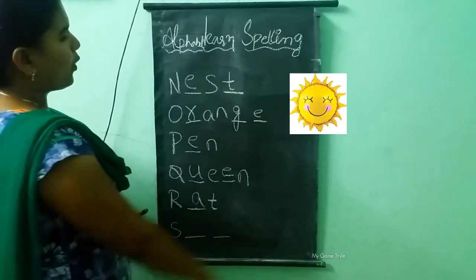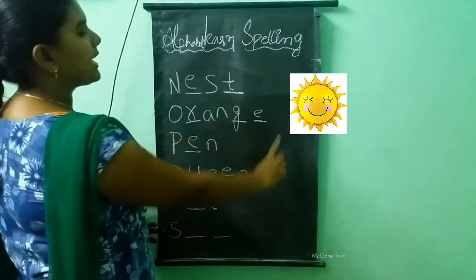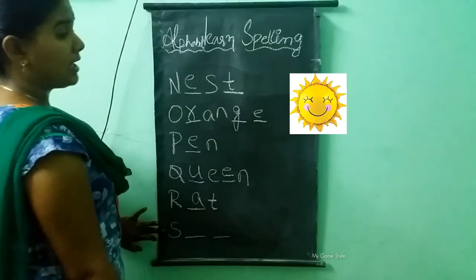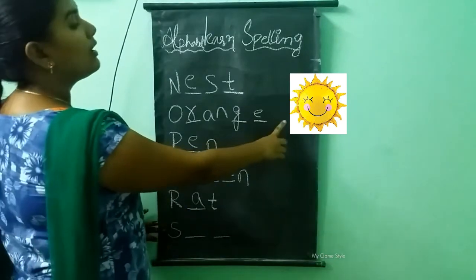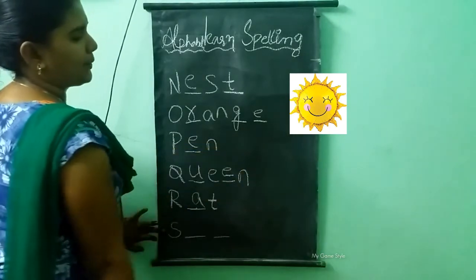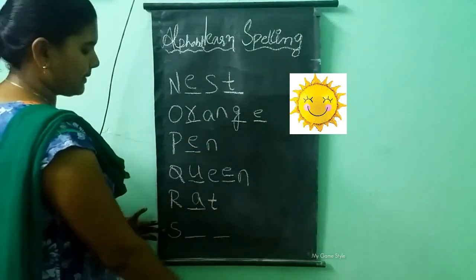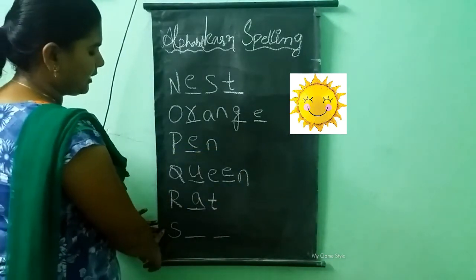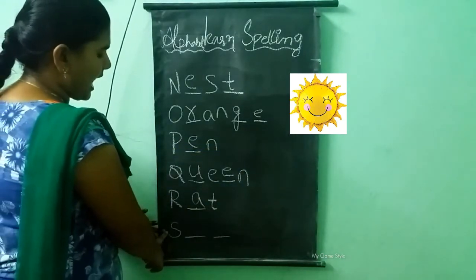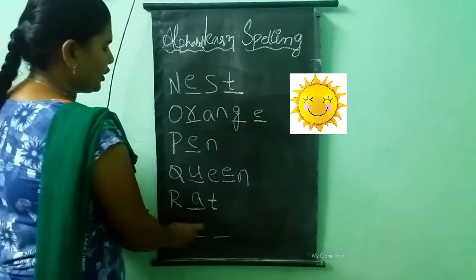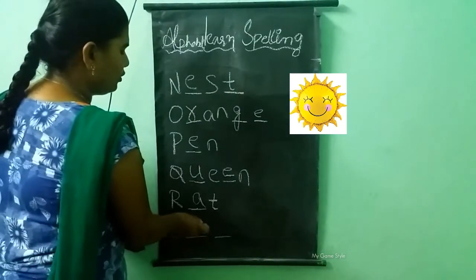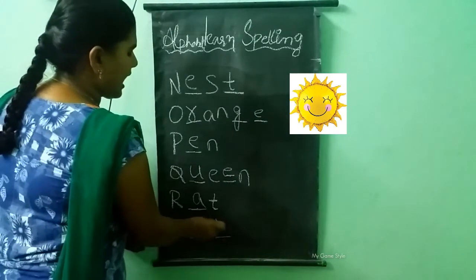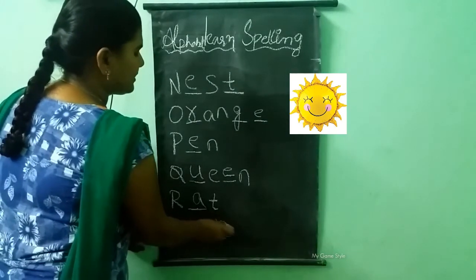What picture is this? This is a sun. What is the spelling of sun? S-U-N. Sun.